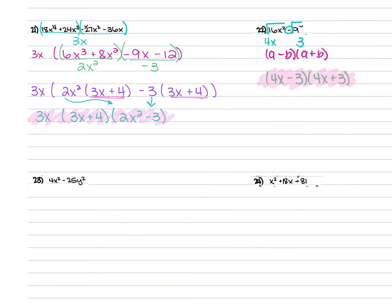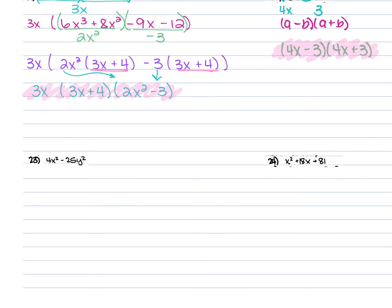For number 23, we have 4x² − 25y². No GCF between the two terms. The square root of 4x² is 2x, the square root of 25y² is 5y, and they're separated by subtraction — so use the difference of squares formula. Final answer: (2x + 5y)(2x − 5y). The order is interchangeable.